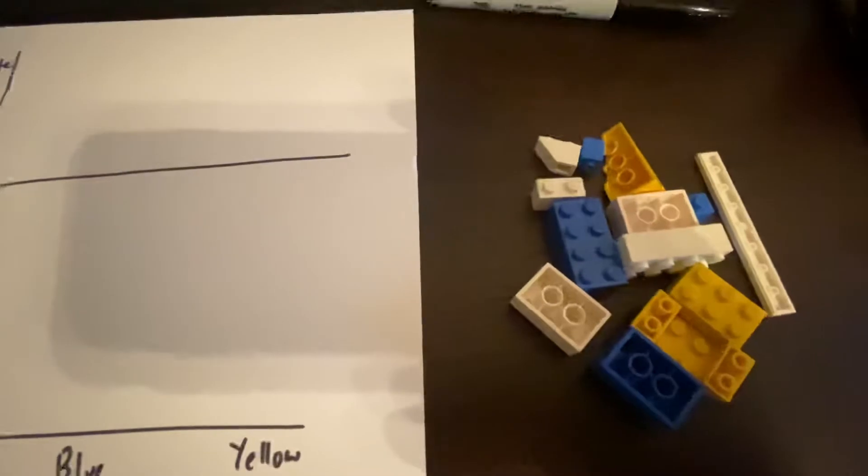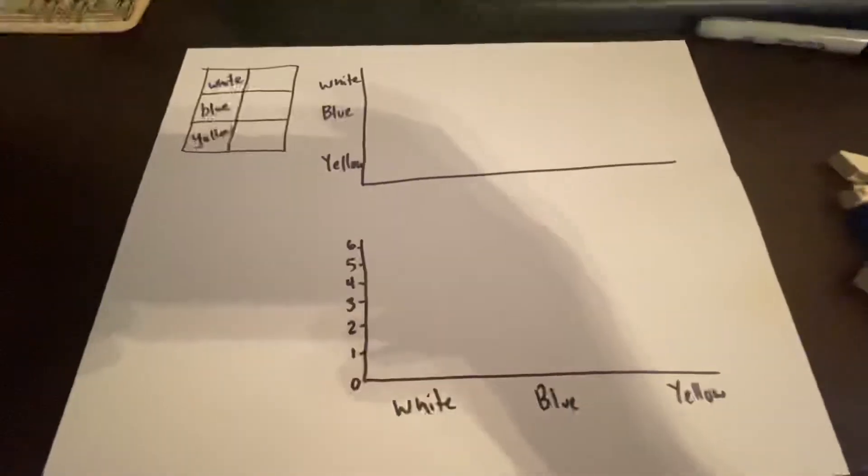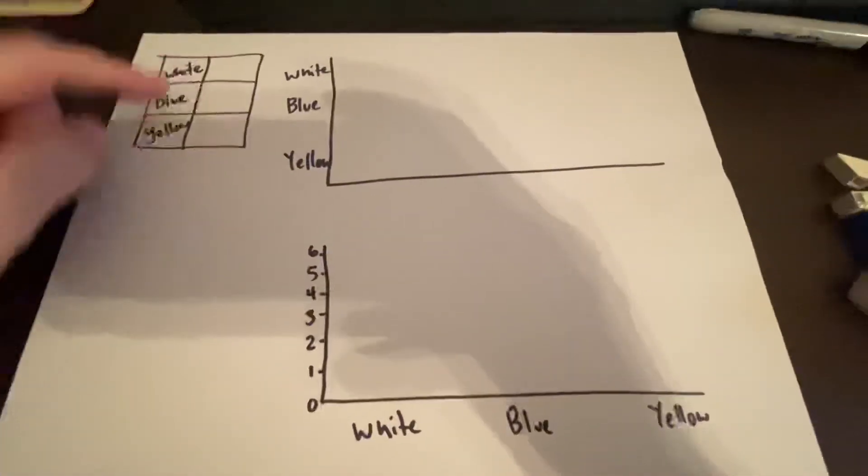Two of the ways are going to be new. One of the ways we've already done. The first way that we're going to do it is just setting up a table. So if you guys take a look at the paper I have set up over here, I've already put together a table.